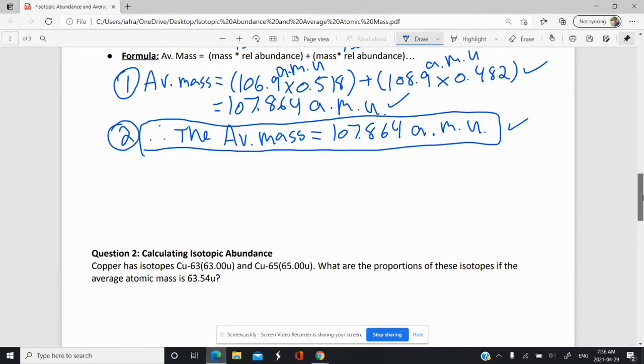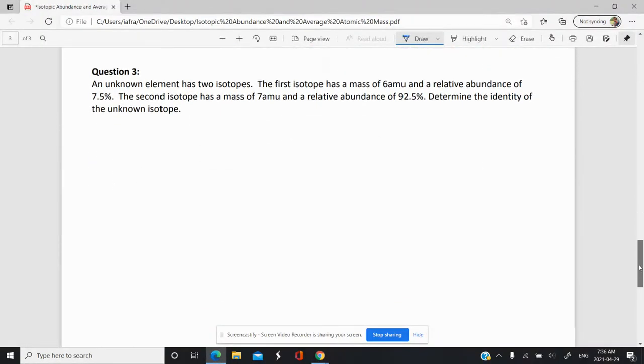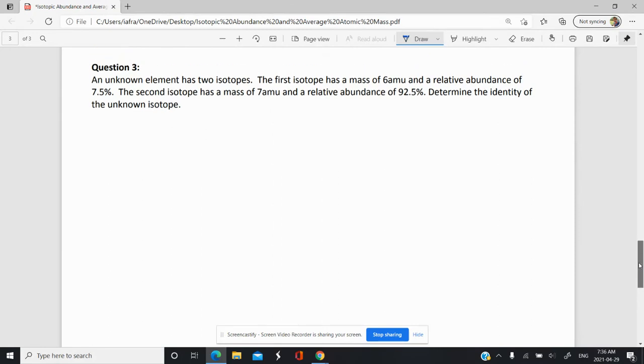So in this video we're going to be doing question 3 from your notes over here. We have an unknown element that has two isotopes.